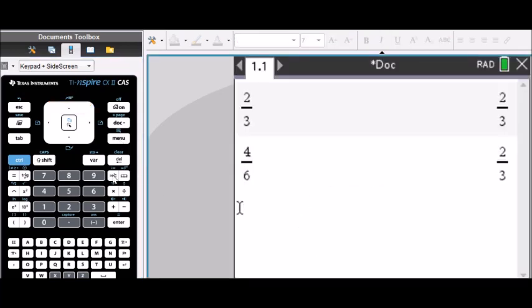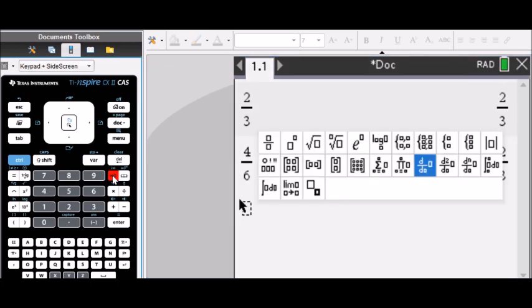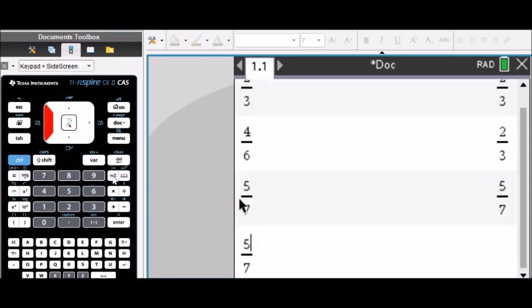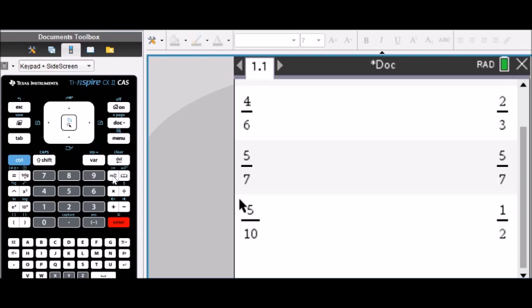What's really cool is this button here. This is a template button. And this template button allows you to enter complicated things in an easy way. 4 over 7 is a fraction. Enter. And to show you it's an actual calculator, if I enter 5 over 10, I'm going to get 1 half. So it simplifies automatically.